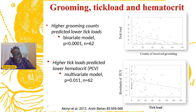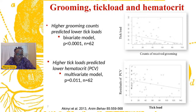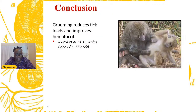Looking at tick load and hematocrit, higher grooming counts predicted lower tick loads — you can see the inverse relationship. At the same time, higher tick loads predicted lower hematocrit, which is the packed cell volume and an index of anemia. Ticks are known to cause anemia. In conclusion for this study, grooming reduces tick load and improves hematocrit.